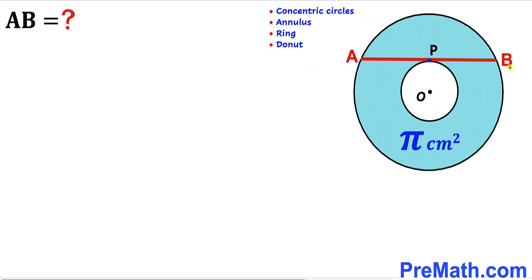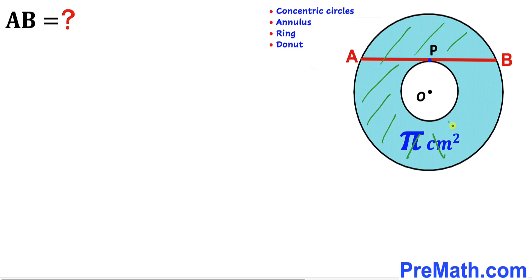Welcome to pre-math. In this video we have these two concentric circles — a big circle and a small circle with a common center — as you can see in the given diagram. As a result we end up with this blue shaded ring, and the area of this blue shaded ring has been given to us as π centimeter square.